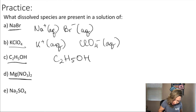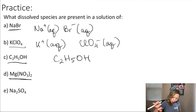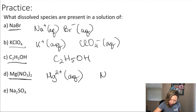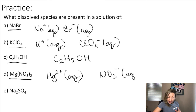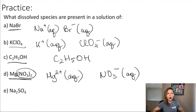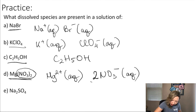What about the next one — Mg(NO₃)₂, magnesium nitrate? Magnesium nitrate is going to fall apart into Mg²⁺ ions, which will be aqueous, and nitrate ions, NO₃⁻. Notice that we have two nitrate ions in magnesium nitrate, so when this ionic compound dissolves in water, it will form one magnesium ion and two nitrate ions. This is really important.